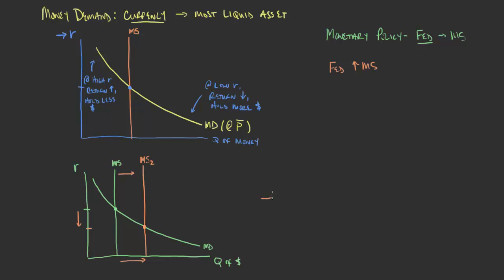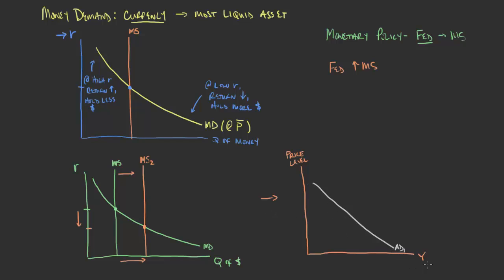What does that now look like on the aggregate demand and aggregate supply curve? We're going to focus on aggregate demand, since we're looking at how monetary policy affects aggregate demand. On the y-axis we're looking at real output or GDP, and on the x-axis the price level. We would have some aggregate demand curve — a downward sloping relationship between output and price levels for reasons we've previously discussed.